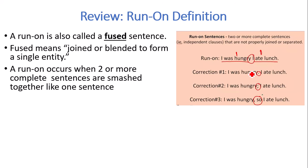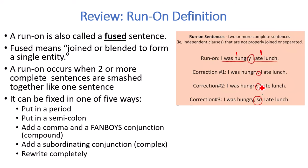So you fix it in one of five ways. You can put in a period — a longer pause. You can put in a semicolon — kind of like a medium pause. You can put a comma plus a FANBOYS conjunction — a brief pause plus a joining word. You can add a subordinating conjunction to make part of the sentence dependent on the other part. Or you can rewrite it completely.